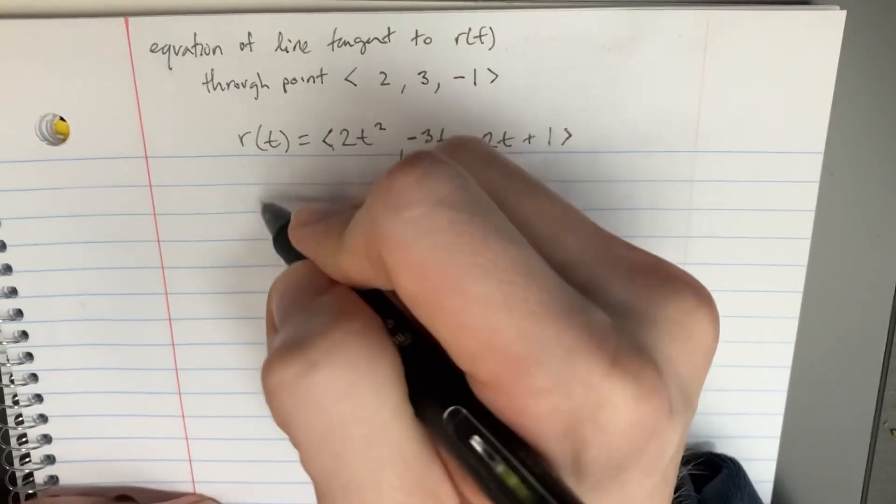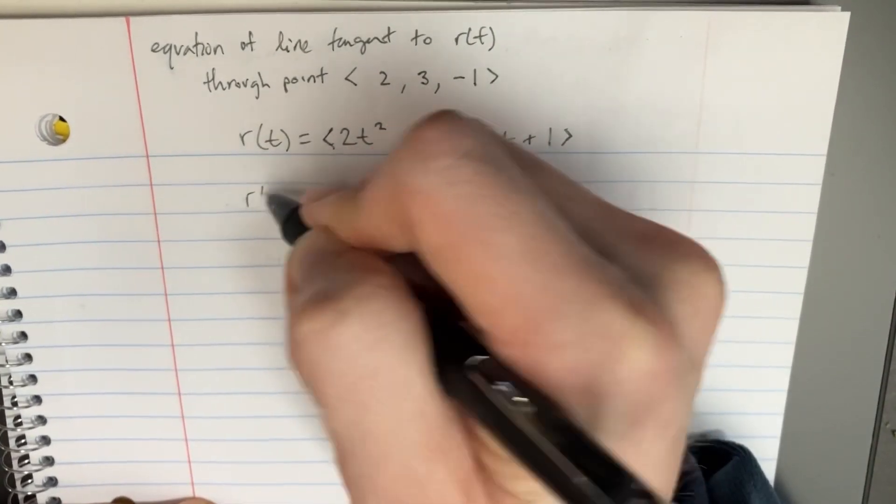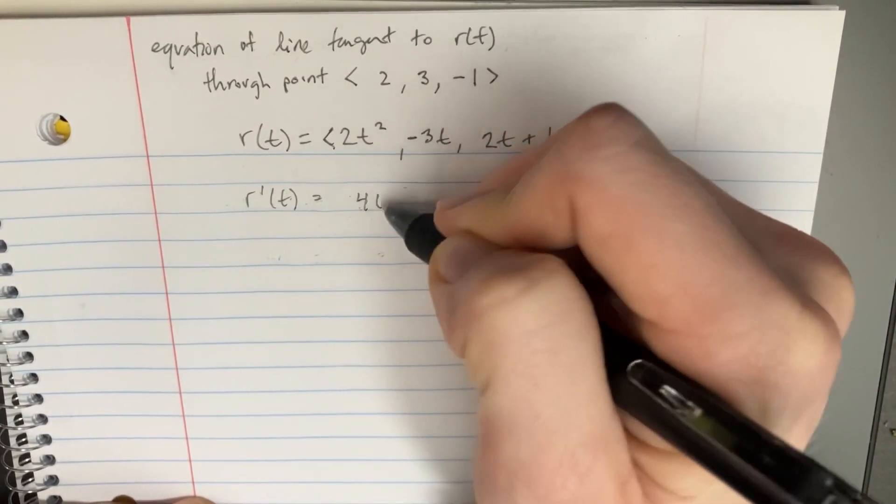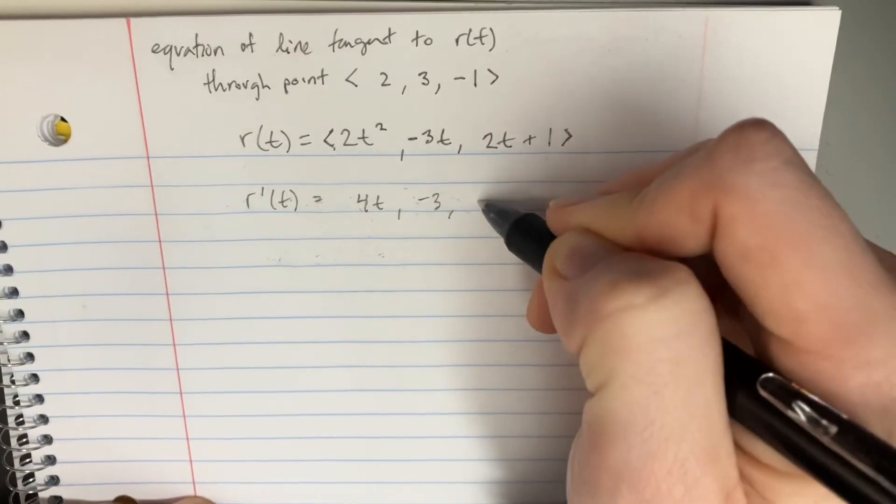Now, first you might be thinking, okay, well, let's find the tangent line, which is just the derivative of t, right? And here we could say, okay, it's 4t, and then we get negative 3, and then 2.